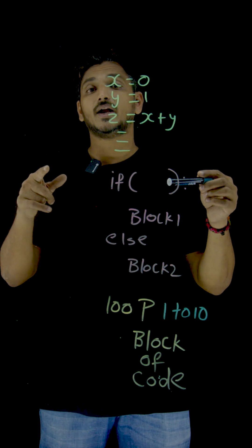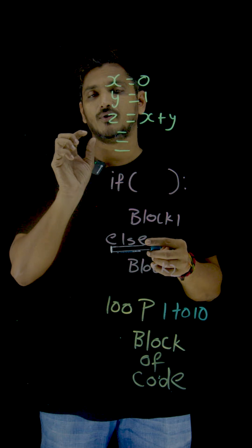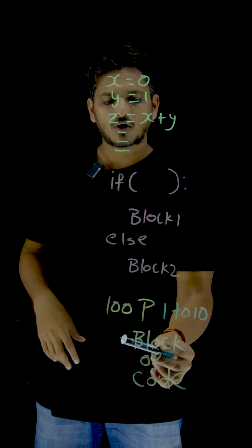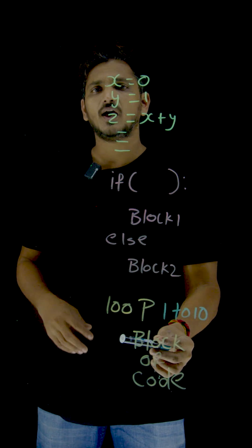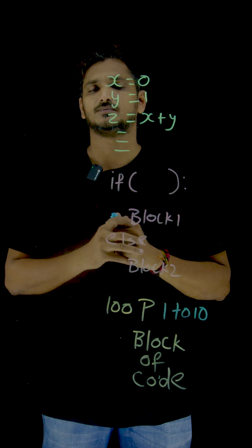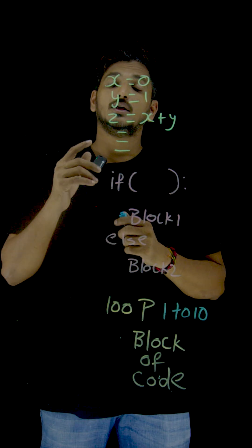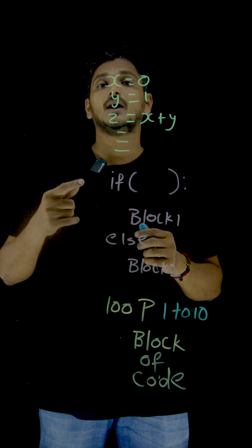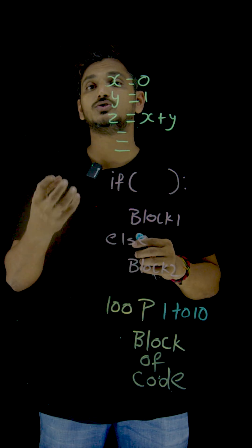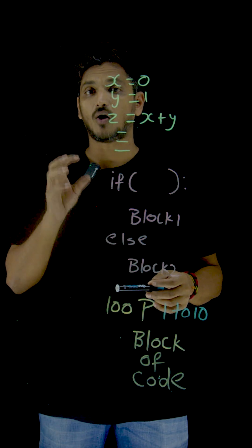For better understanding, let's understand with a web development example. Suppose in this block of code we have written a logic to display student details. If you want to display the list of students present in your class, assume that in your class you have 70 students. If you want to display all the details of 70 students...